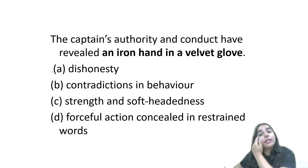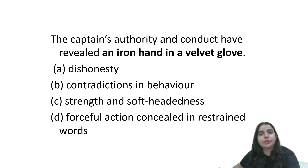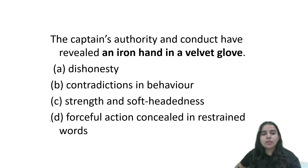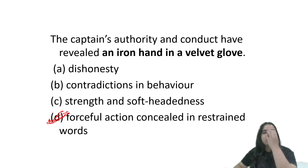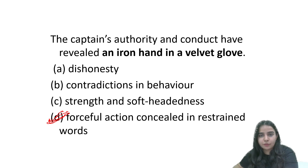So does it mean dishonesty, contradictions in behavior, strength and soft-headedness, or forceful action concealed and restrained? The outer appearance looks very soft and tender, but inside it is very strict and firm. So the answer is going to be D — the option that matches best. That is, from outside someone looks very soft, but inside he is very strict. That is an iron hand in a velvet glove.